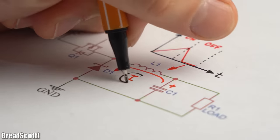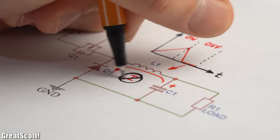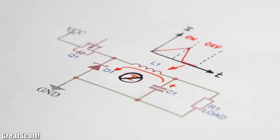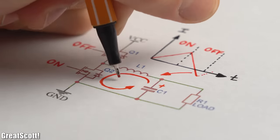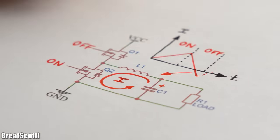Now before, in DCM mode, the diode prevented current from flowing from the capacitor and through the inductor. But now that we got a MOSFET here, this current flow can actually happen, which will once again decrease the efficiency.